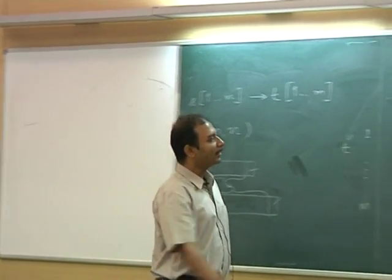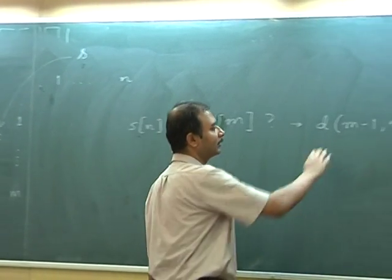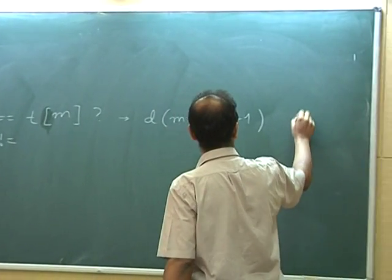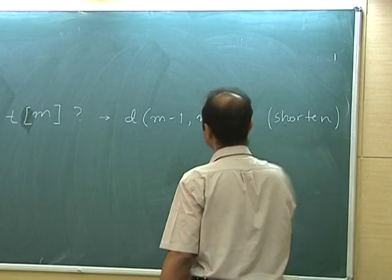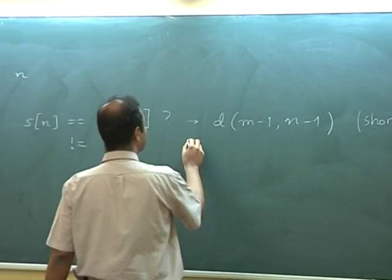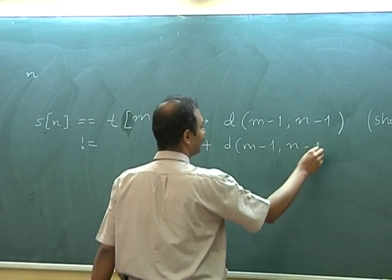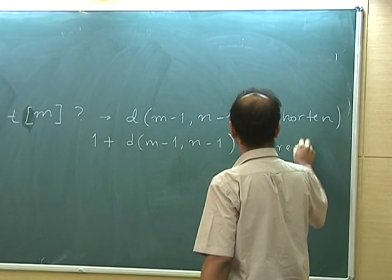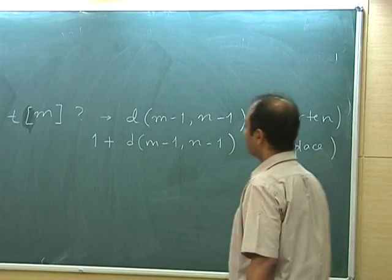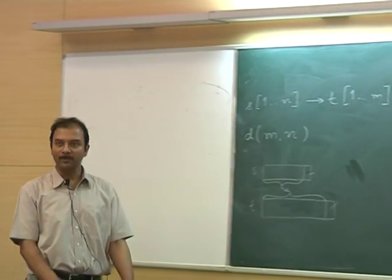The other possibility is that these are not equal and we decide to replace. This is the 'shorten each' option — shorten both strings. In that case, I end up with a recursive cost of 1 plus d(M-1, N-1). This is the replace action. I pay one unit for replacing this character with that character, and then I solve the smaller problem recursively.